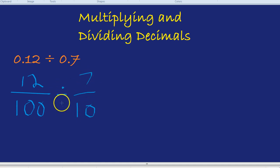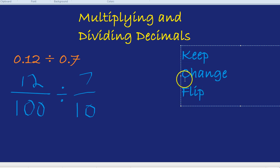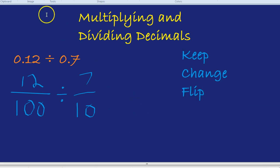If you're not sure how to divide fractions, I have done another video on this, but it's called keep, change, flip, keep, change, flip, which I did not invent. Which is a very good way of doing it. You keep the 12 over 100 the same. So 12 over 100 stays the same, that's the keep. You change the divide into a times, and you flip the other fraction, so it becomes 10 over 7.